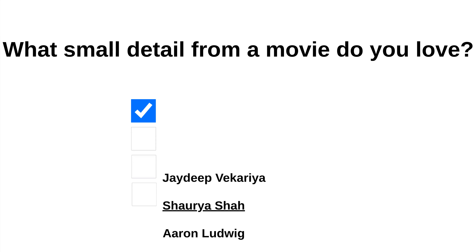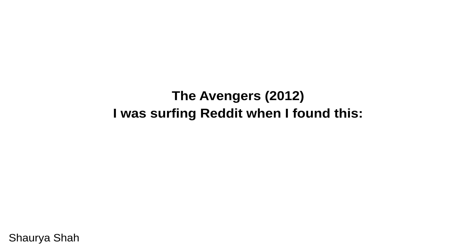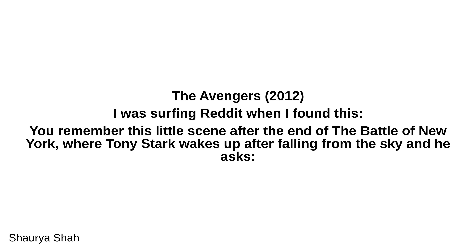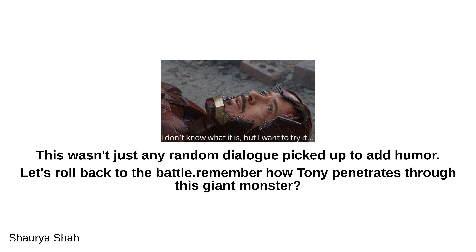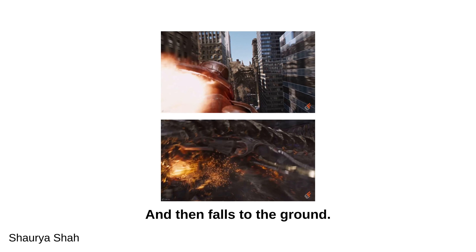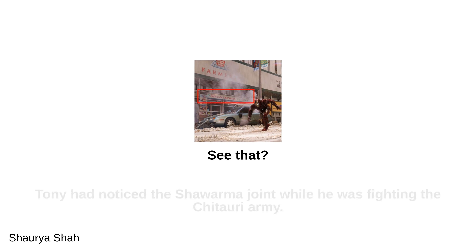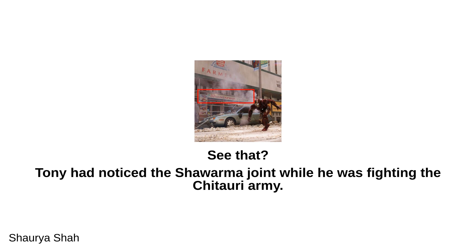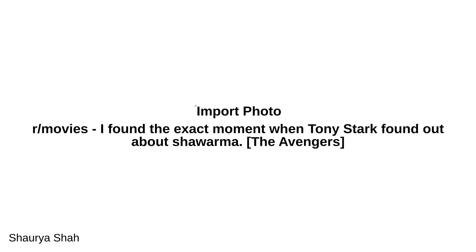We continue with Shaoria Shah's answer about The Avengers 2012. After the end of the Battle of New York, Tony Stark wakes up after falling from the sky and asks about Shawarma. This wasn't just random dialogue added for humor. During the battle, Tony actually penetrates through a giant monster and falls to the ground. If you look closely, Tony had noticed the Shawarma joint while he was fighting the Chitauri army — he sure has a keen pair of eyes. Source: The Avengers film.